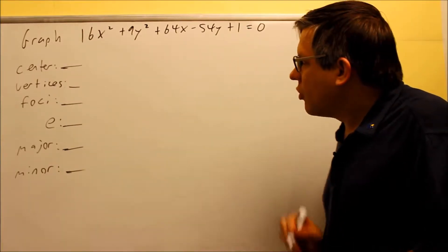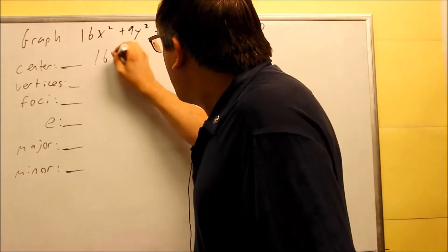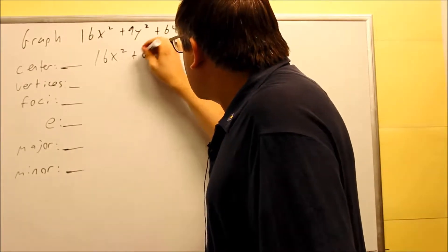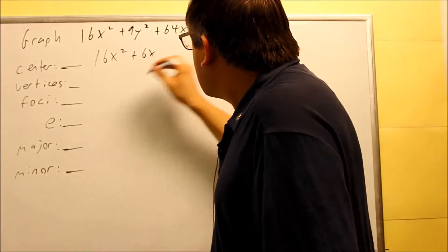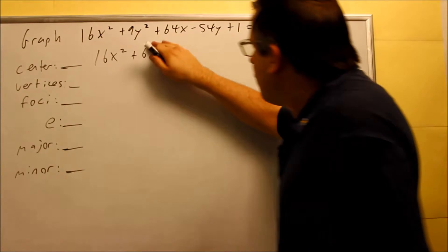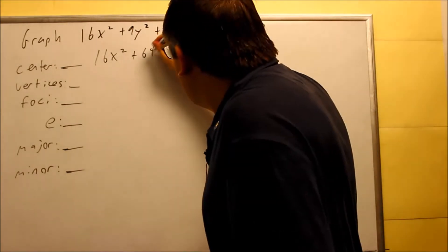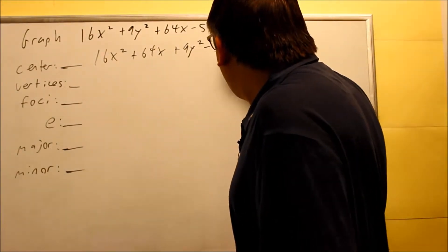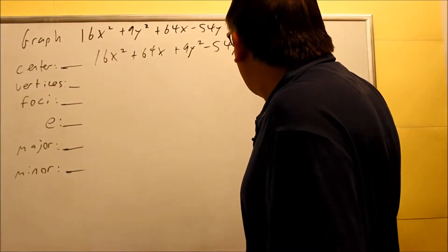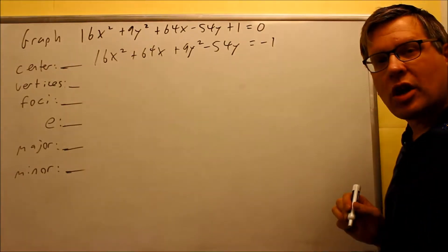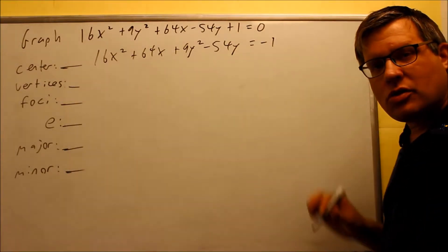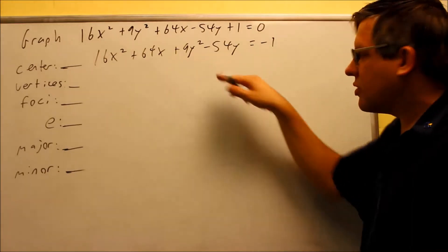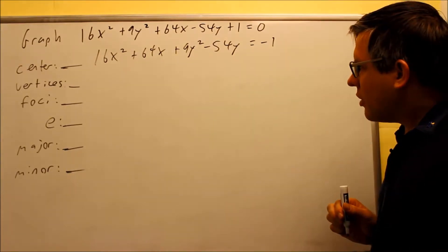In order to complete the square steps, we need to first write the x's together: 16x squared plus 64x, then 9y squared minus 54y, and the negative 1 I'm going to put on the other side where it becomes negative. So I'm basically regrouping here, putting the x's and the y's together.